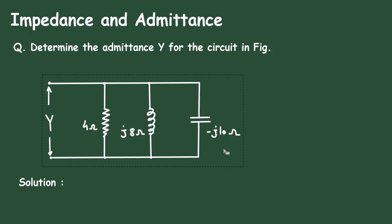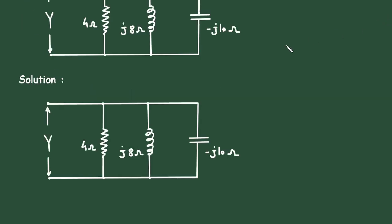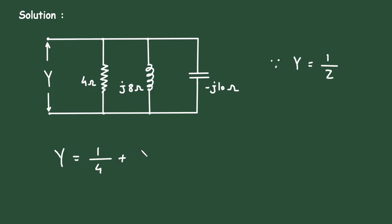First, let's look at the circuit. The values are given in ohms, which means they are in impedance format. Therefore, y is equal to 1 upon z. Since y = 1/z, we can write y = 1/4 plus 1/j8 plus...